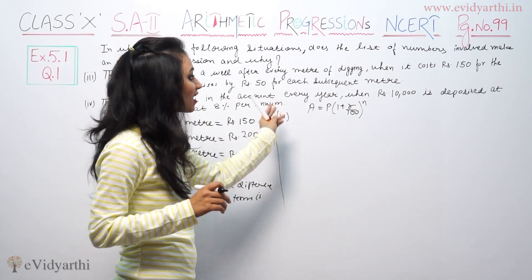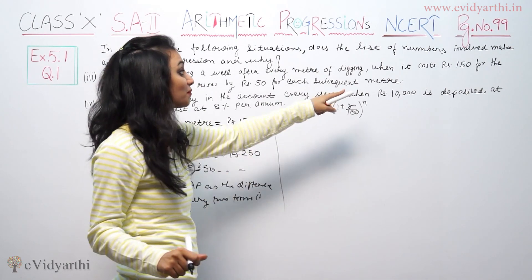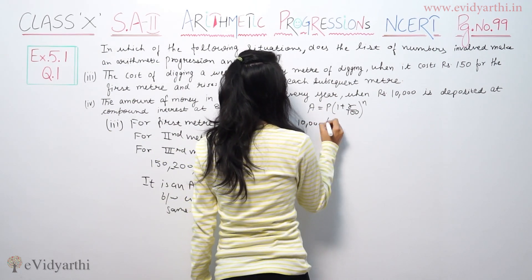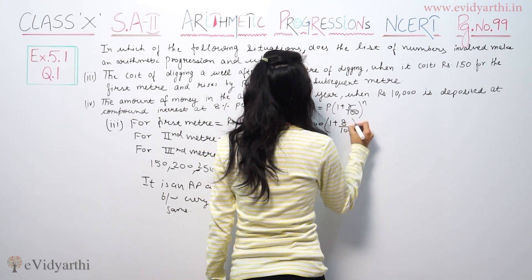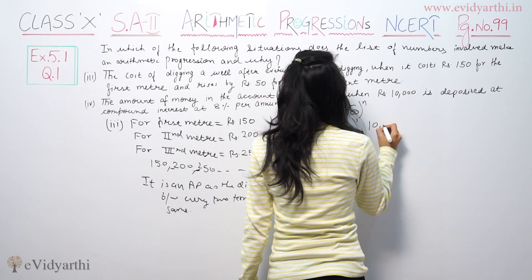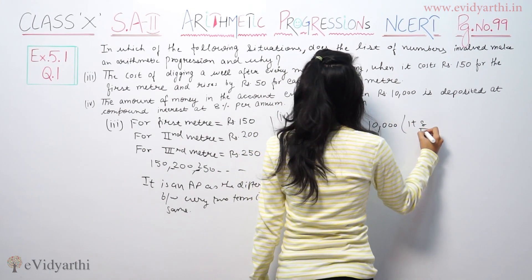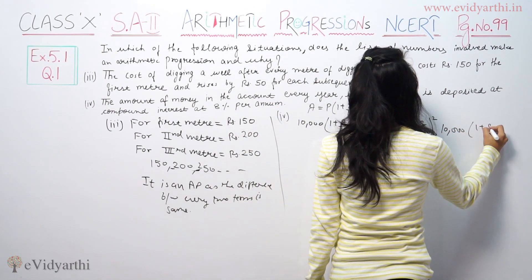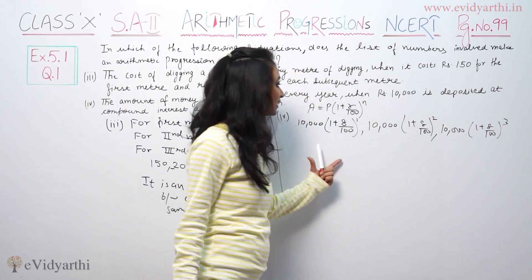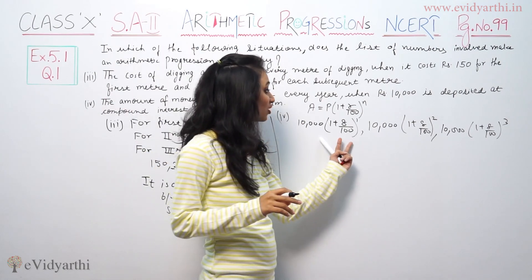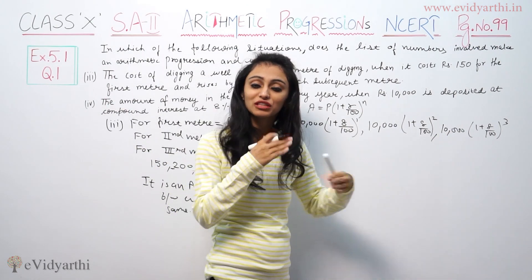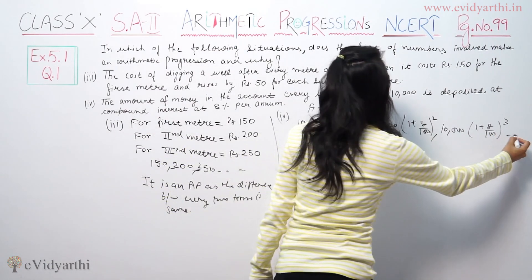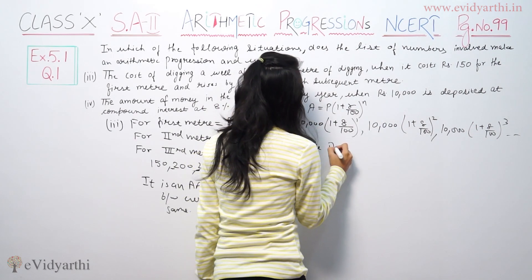The rate of interest is 8%, and the principal deposited is rupees 10,000. For year 1, the amount will be 10,000 plus interest of 800. For year 2 and year 3, the amounts keep changing differently. When you look at it, the difference between consecutive terms is not going to be the same, hence it is not an AP.